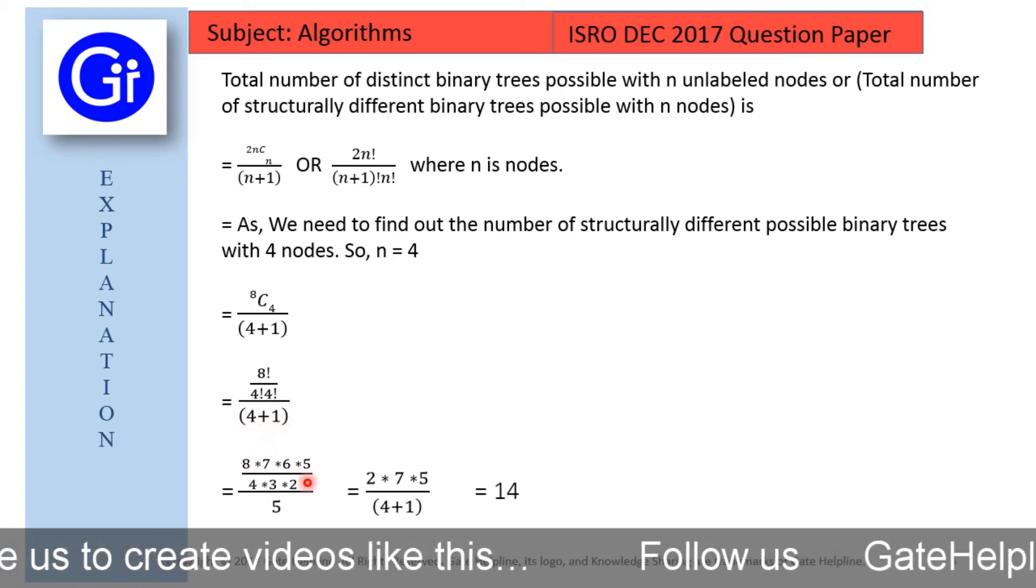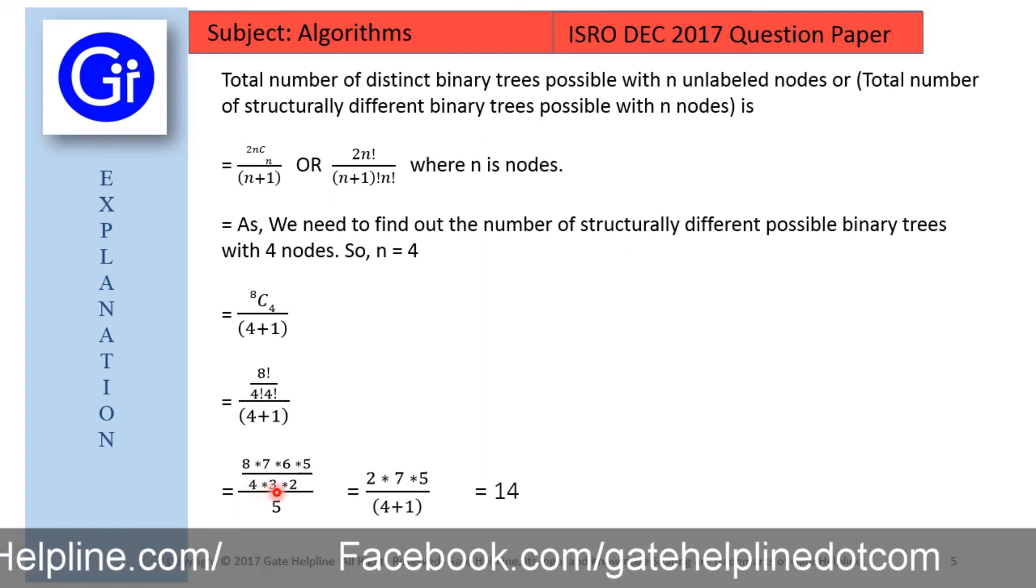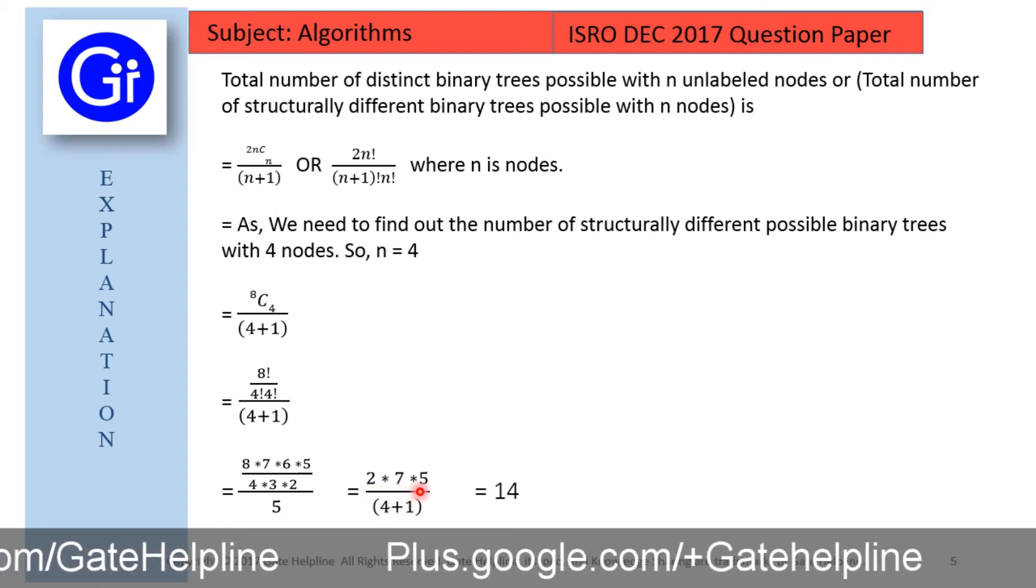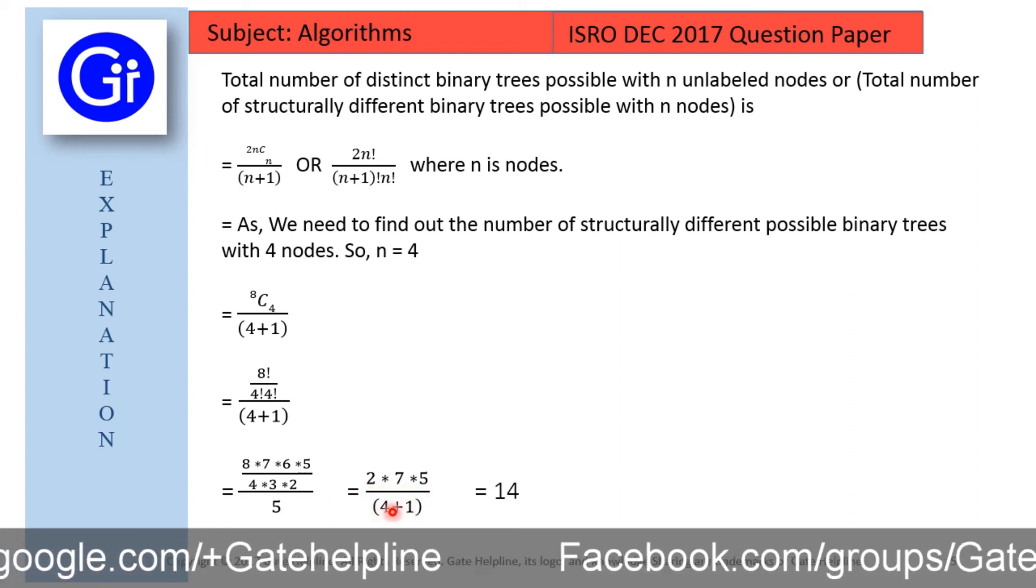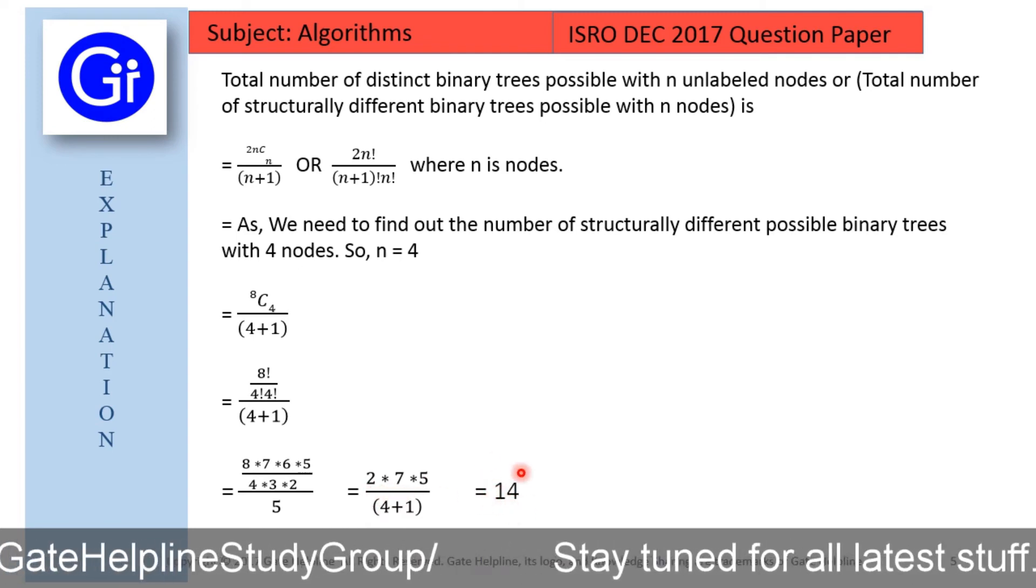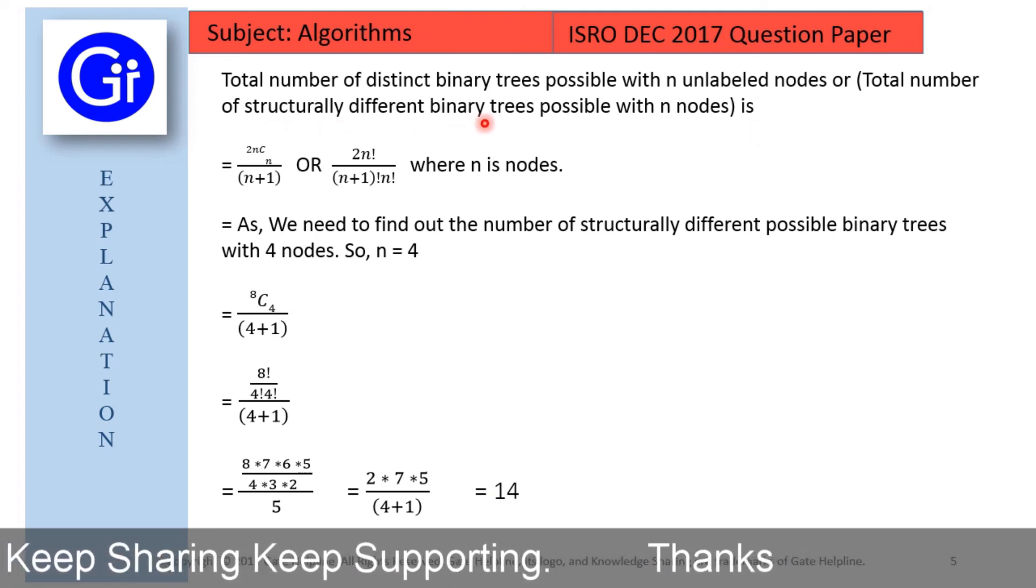So we resolve this, we will get 4 into 7 into 6 into 5 upon 4 into 3 into 2 upon 5, which results in 2 into 7 upon 4 plus 1. We cancel these 5, equals to 2 into 7, that is 14. So 14 number of structurally different binary trees are possible with 4 nodes.